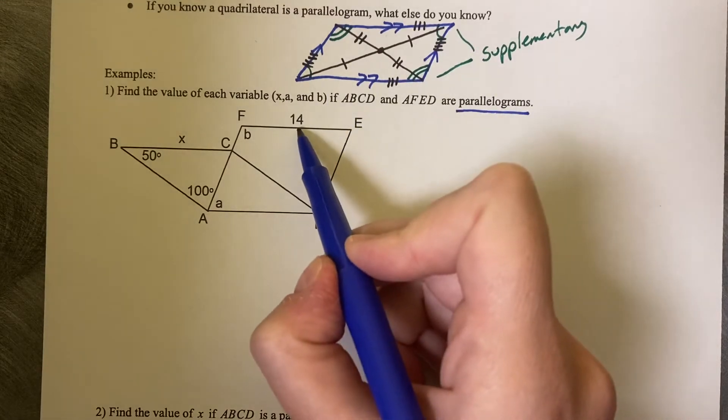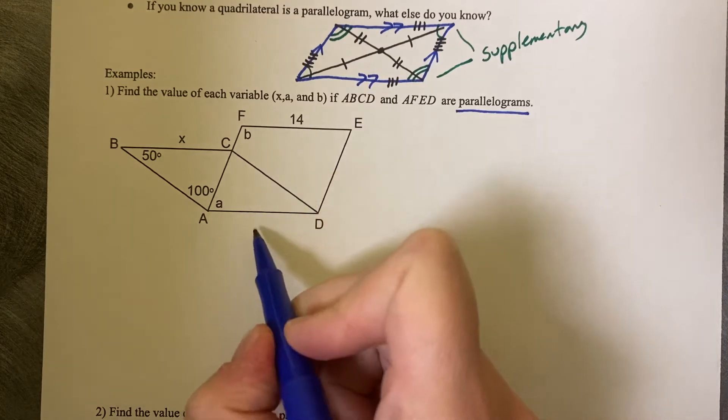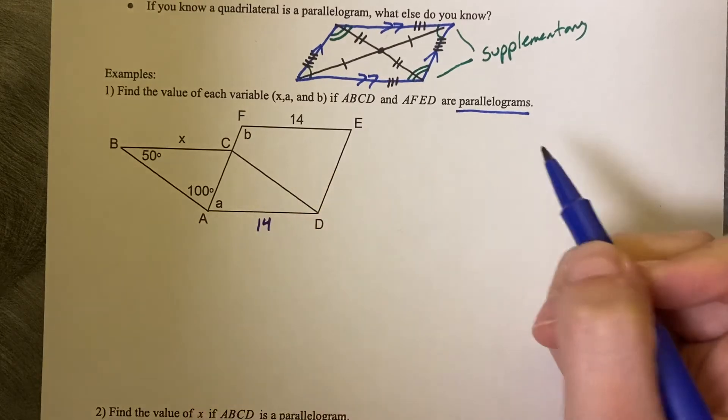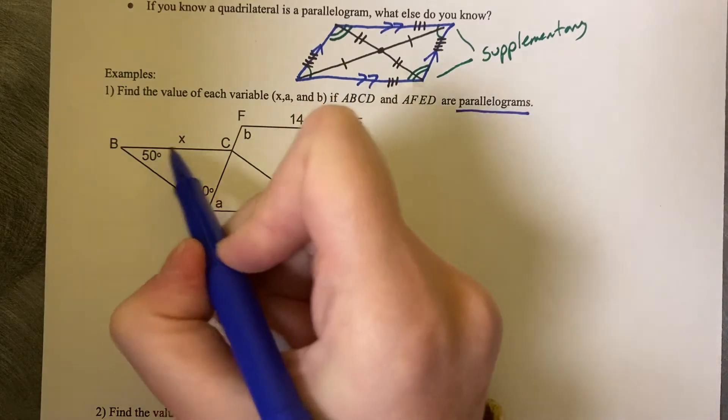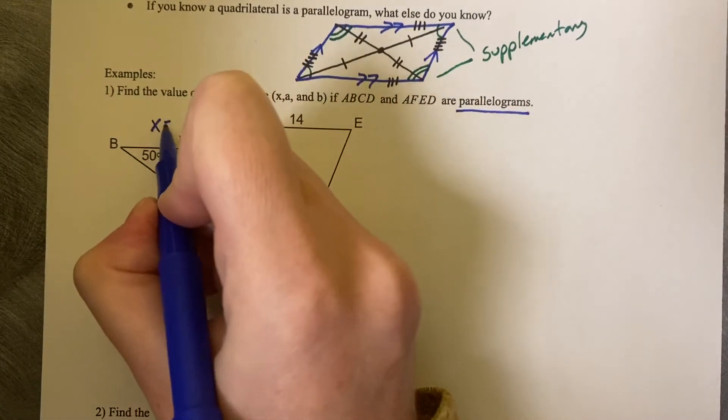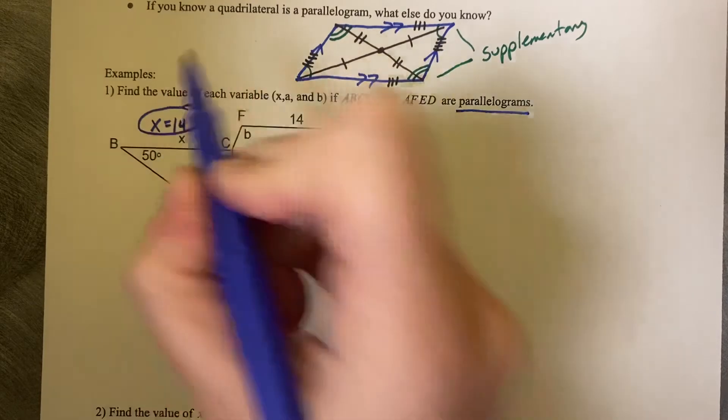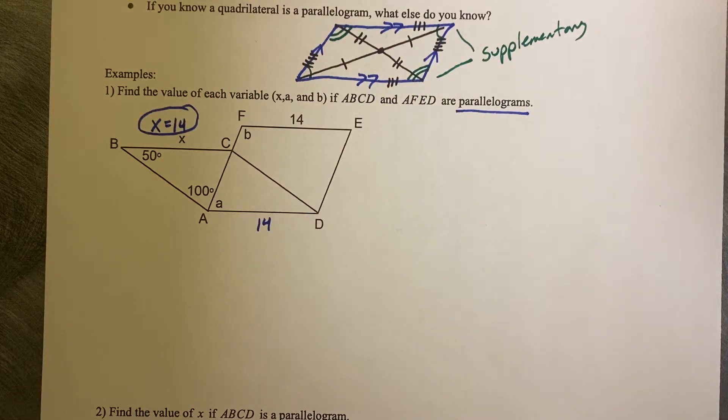So if this is 14, the length of 14, then AD is also 14. And if AD is 14, then BC is also 14. So the side length BC is the length of 14.